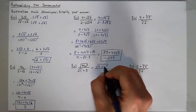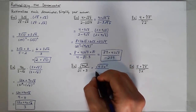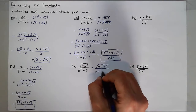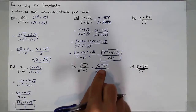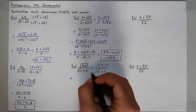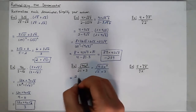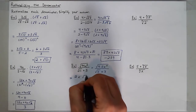x squared is also a perfect square, so when I simplify I get 2 on the outside and x square roots of 11 on the inside.